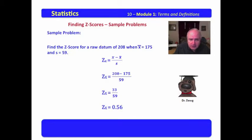Again, we would interpret the Z-score. The Z-score is above the mean, and it's 0.56 standard deviations above the mean, which would let it be located right here.